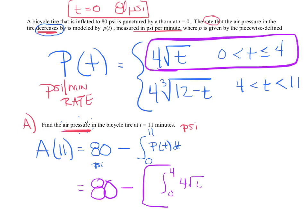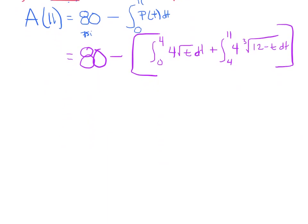A of 11 equals the 80 I started with minus - we're going to have to break this function up, this piecewise, at 4. I have to integrate from 0 to 4 of P of t, which is 4 radical t dt, and add on to that from 4 to 11 of my other function, 4 cubed root of 12 minus t dt. It would be 80 minus that answer.